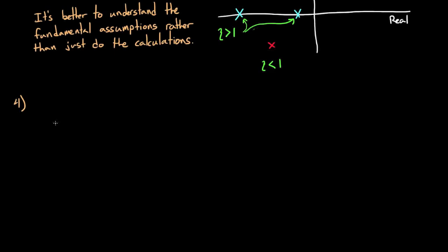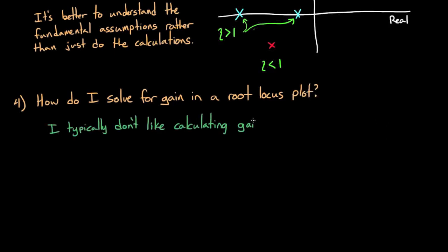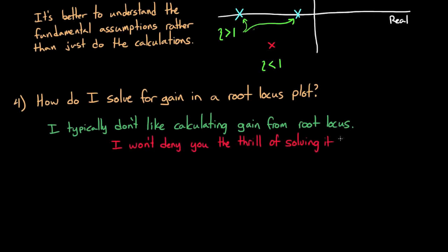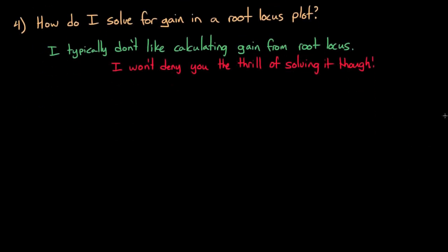Moving on to question number 4. I was asked how do I solve for the gain required to place the roots where I want them using the root locus plot? Now I mentioned in one of my videos that I don't really like calculating gain from hand-drawn root locus plots because I don't feel that's the best use of them. I personally think root locus is fantastic for understanding how the poles move as you manipulate the system gain or adding additional poles and zeros. But I think calculating the gain in most cases requires a very accurate plot, and that defeats the purpose of doing a rough sketch by hand.